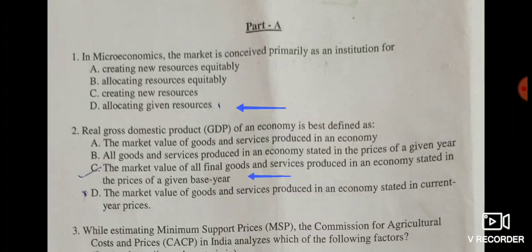First question: in microeconomics, the market is conceived primarily as an institution for — given options are: creating new resources equitably, allocating resources equitably, creating new resources, and allocating given resources. The correct answer is option D: microeconomics primarily conceives the market as an institution for allocating given resources.